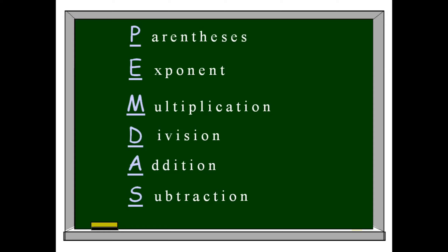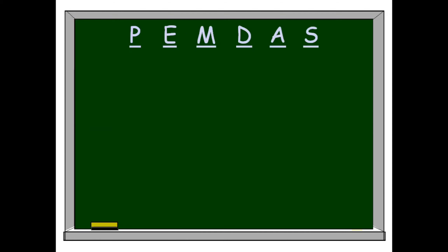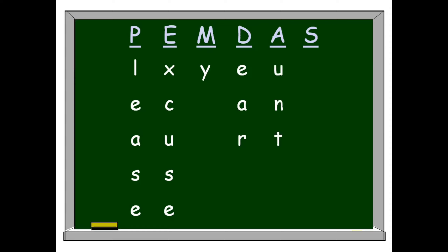If you cannot memorize each word from PEMDAS, you can replace it with this statement: P for Please, E for Excuse, M for My, D for Dear, A for Aunt, and S for Sally — Please Excuse My Dear Aunt Sally. That's how you're going to memorize PEMDAS.